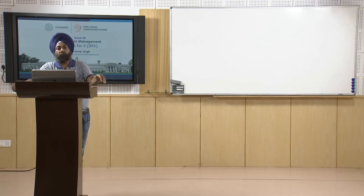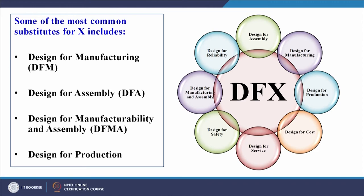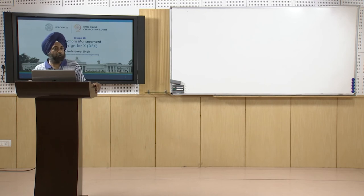Some common substitutes for X include: design for manufacturing, design for assembly, design for manufacturability and assembly, design for production, design for quality, and design for safety. As shown in the figure on screen, X can also be design for cost, design for service, design for reliability. We must ensure that when designing a product, we follow these guidelines religiously and judiciously.